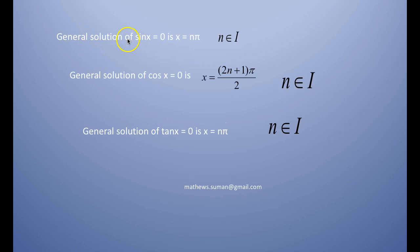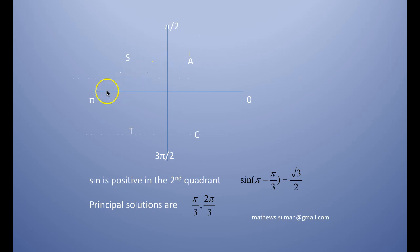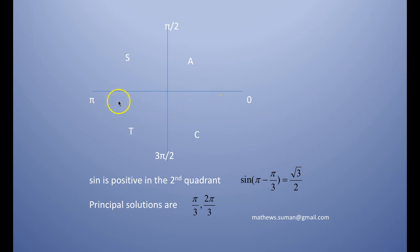Coming to general solutions — by general solution we mean solutions which can be generalized. The general solution of sin x = 0 is x = nπ. This is because on the horizontal axis, sin 0 = 0, sin π = 0, sin 2π = 0, sin 3π = 0, so the general solution of sin x = 0 is x = nπ.